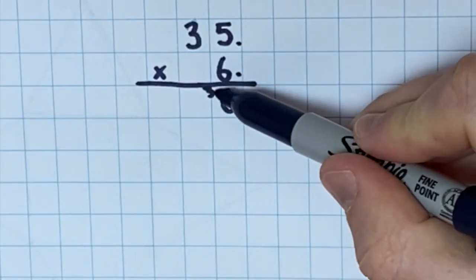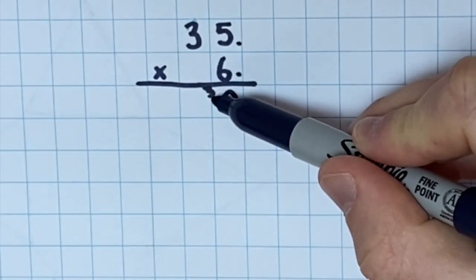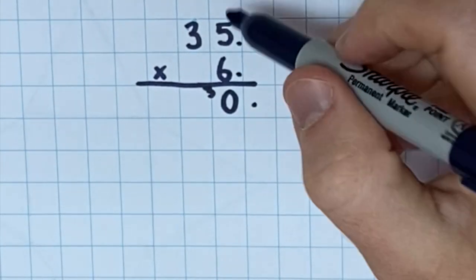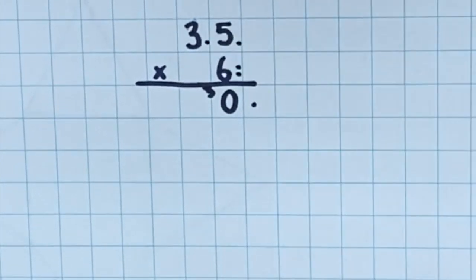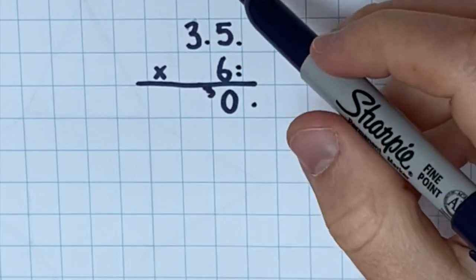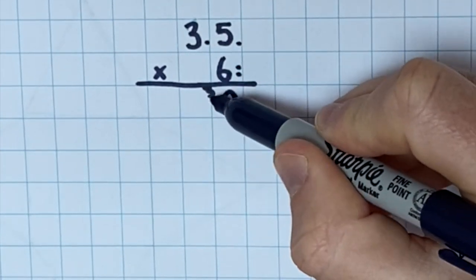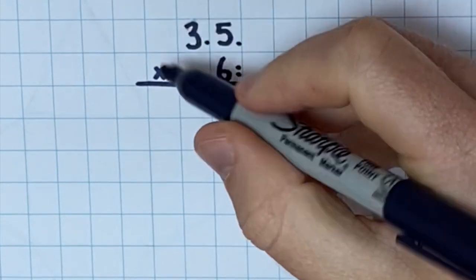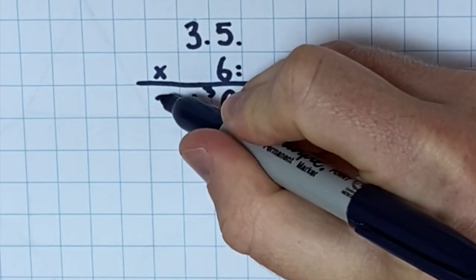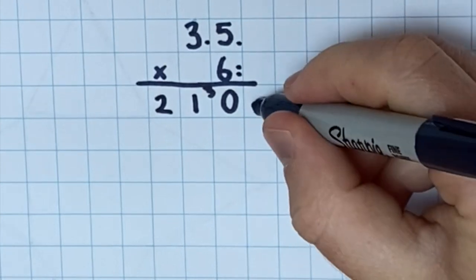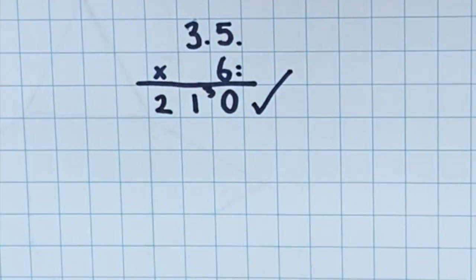But this time, I'm going to carry, I'm going to write the 3 in small. 6 multiplied by 3 is 18. So I can't just write 18. I need to add this 3 on as well. So 18 add 3 is 21. And I get the same answer.